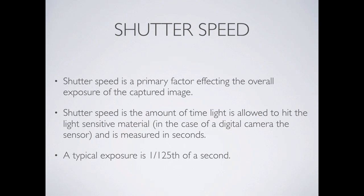Shutter speed is the other big thing we talk about. It basically means how long the light-sensitive material is exposed to light. If it's really quick, it tends to freeze motion; if it's really slow, it blurs motion. It's generally in the range of one-tenth to one-one-thousandth of a second — really, really short in duration. A typical exposure is one-hundred-and-twenty-fifth of a second, so very, very quick.